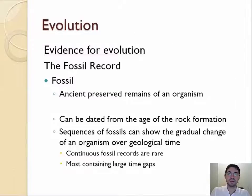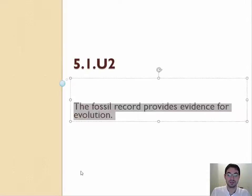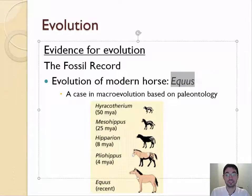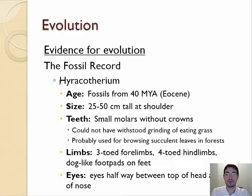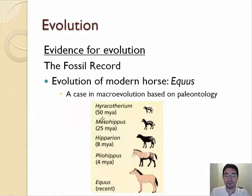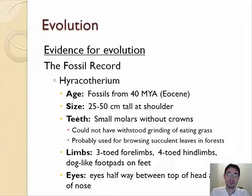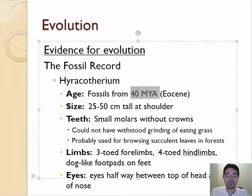Let's talk about an example — you do not need to know this example for the assessment statement. A great example of fossils with a fairly continuous set of populations is that of the modern horse, or Equus. We can actually see the horse change over time, from Hyracotherium to Mesohippus to Hipparion to Pliohippus to modern Equus. Hyracotherium lived about 40 million years ago and was only 25 to 50 centimeters tall.